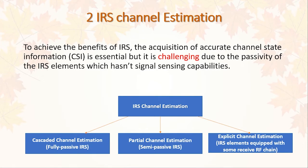The second section is IRS channel estimation. To achieve the benefits of IRS, the acquisition of accurate channel state information, CSI, is essential but challenging. It is essential because IRS needs CSI to set its reflection coefficients to reflect incident signals. It is challenging due to the passive and massive elements of IRS. Passive elements means IRS has passive elements without any sensing capabilities to send or receive pilot symbols. The massive elements increase the links or parameters to be estimated, and during limited channel estimation time, the IRS cannot estimate the full CSI.